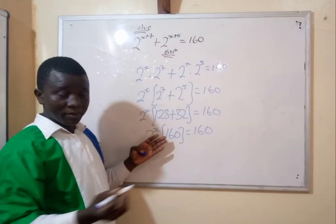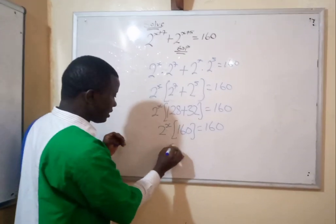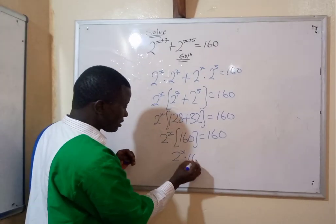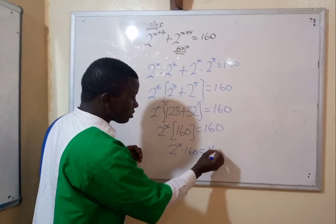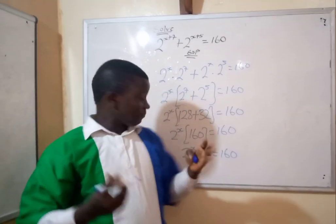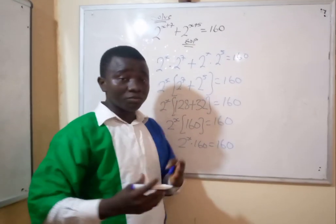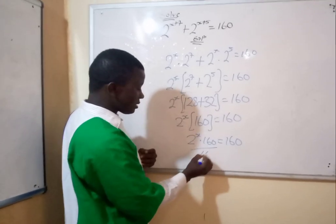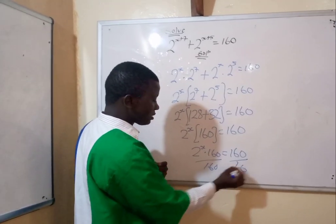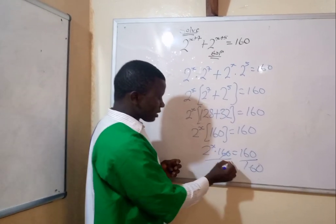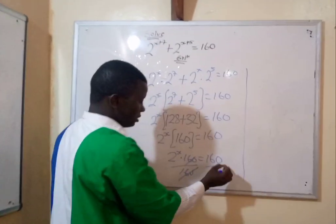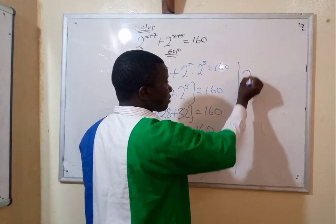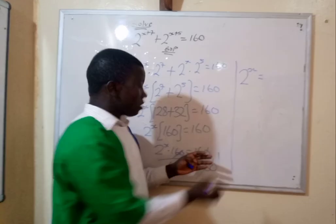Now you expand and take out the bracket. This becomes 2 to the power x multiplied by 160 equals 160. The 160 is on both sides, left and right, so you divide both sides by 160. The 160s cancel, and here remains 1. So you have 2 to the power x equals 1.